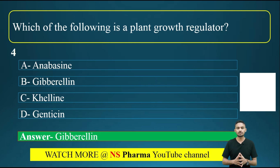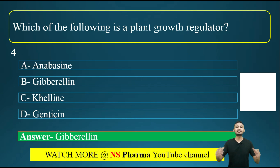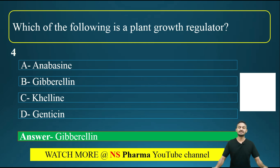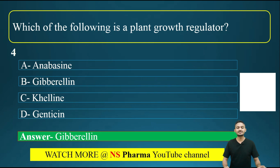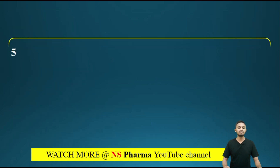The other plant growth regulators are: auxin, gibberellin, cytokinin, ethylene, and abscisic acid. These are the plant growth regulators. In this question, gibberellin was the correct choice. Now moving to the next question.